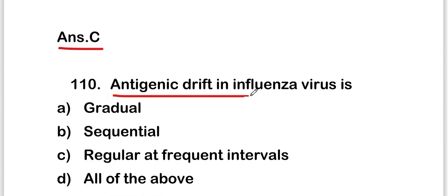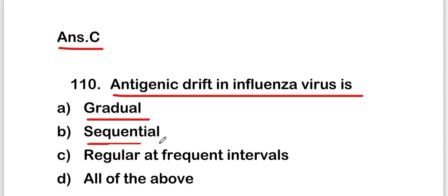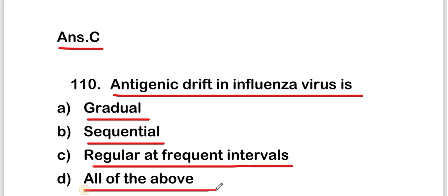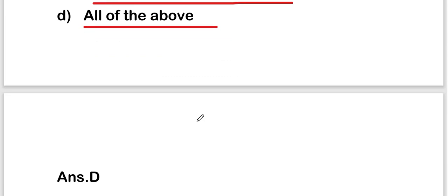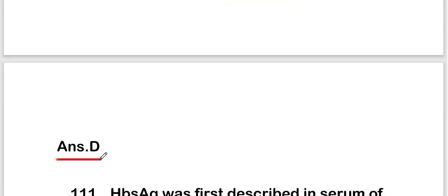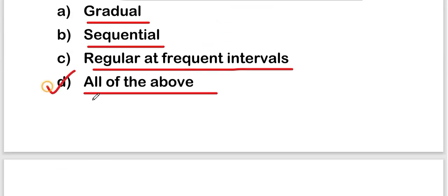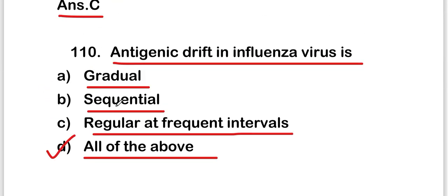The next question is: antigenic drift in influenza virus is — gradual, sequential, regular at frequent intervals, or all of the above? The right answer is option D, that is all of the above. Antigenic drift in influenza virus is gradual, sequential, and regular at frequent intervals.